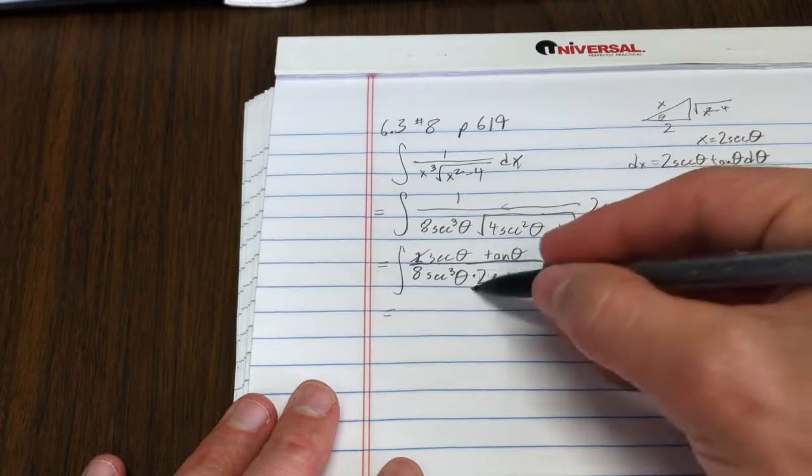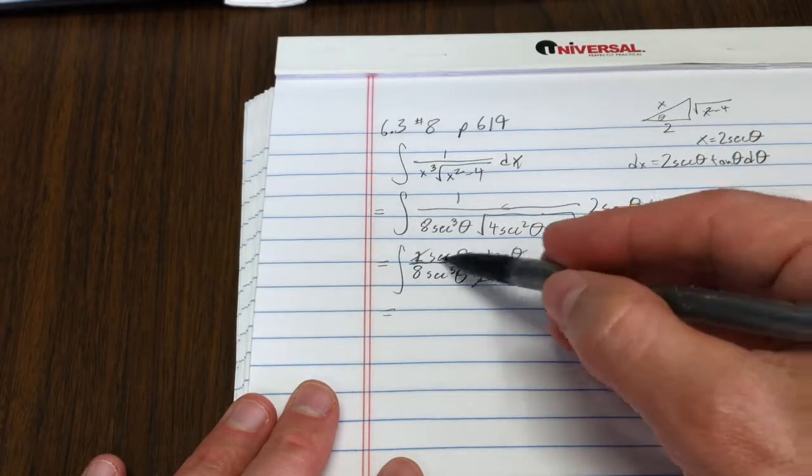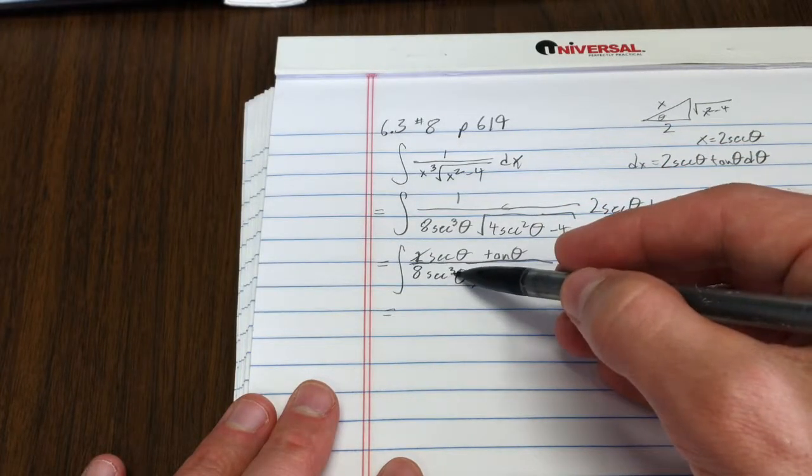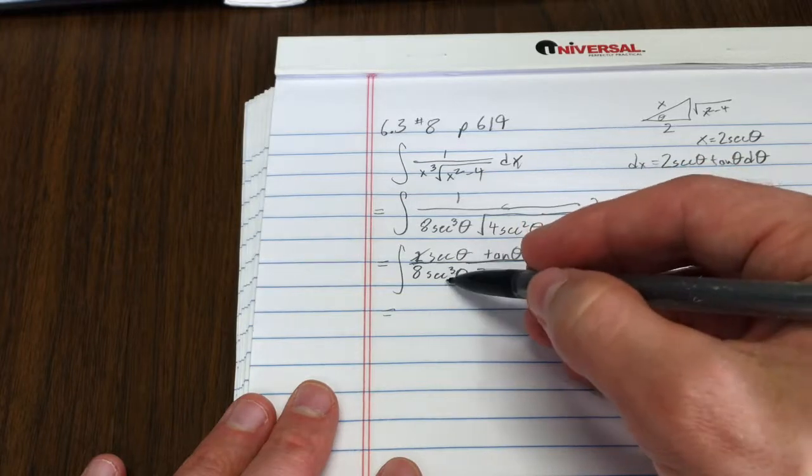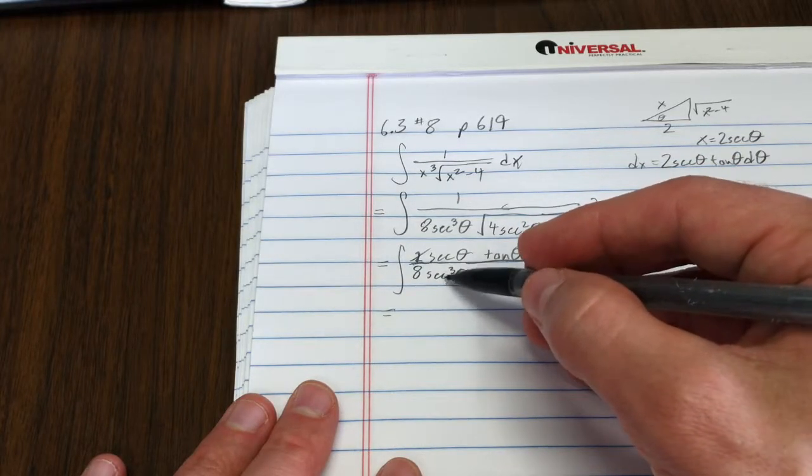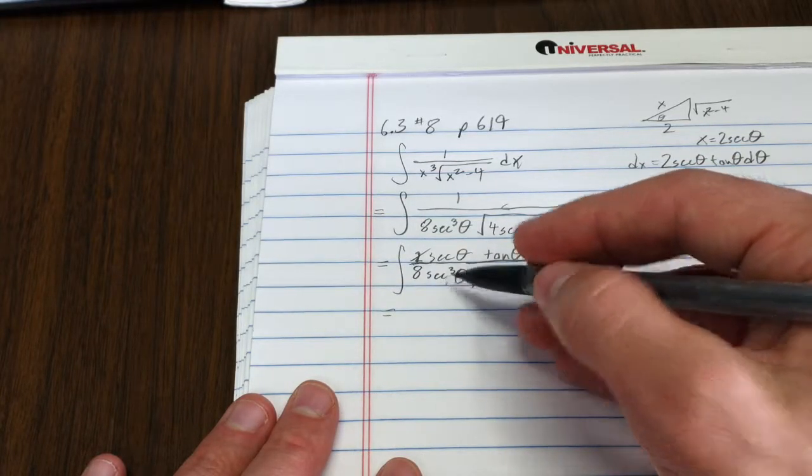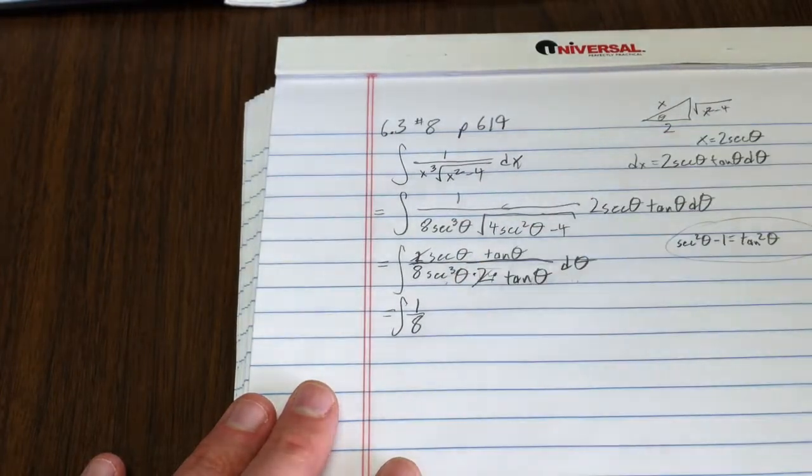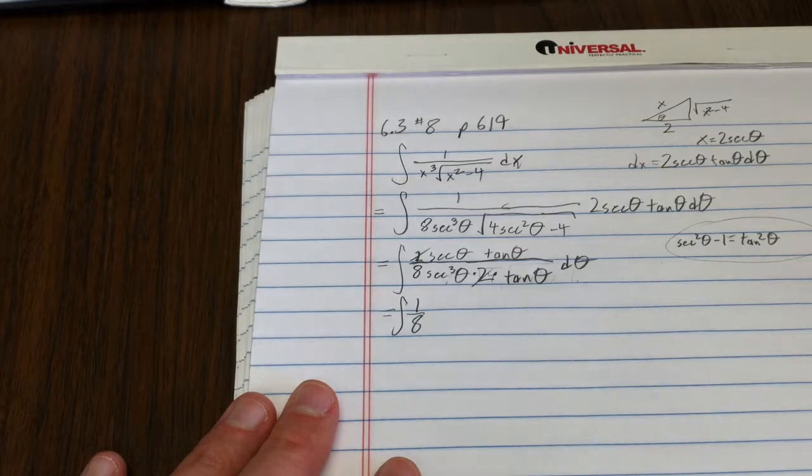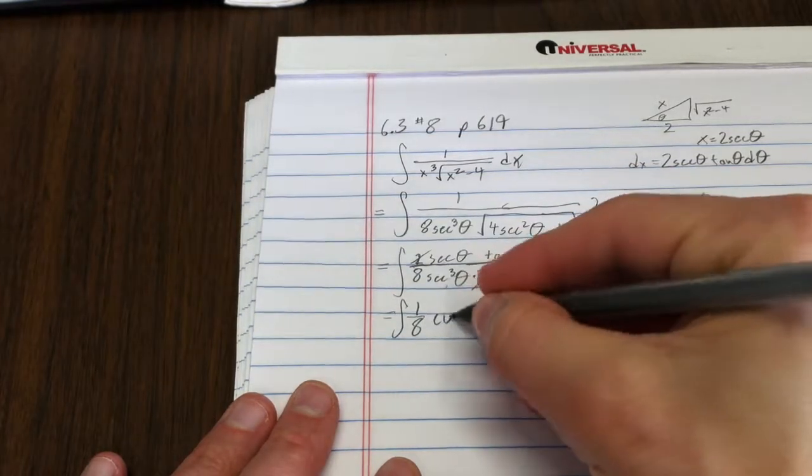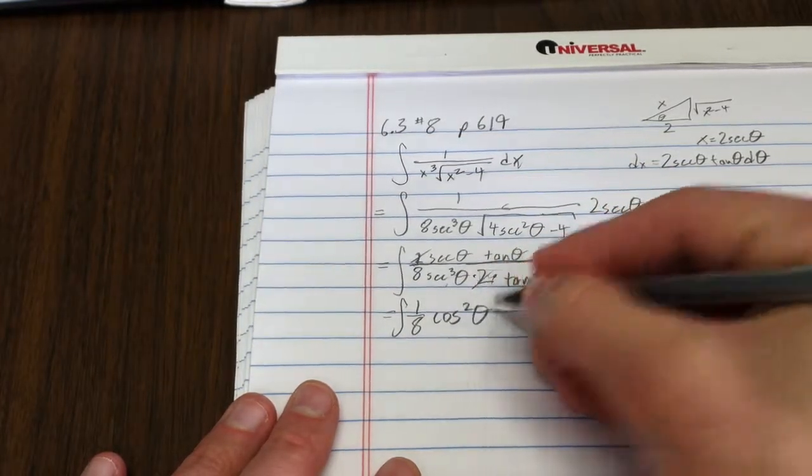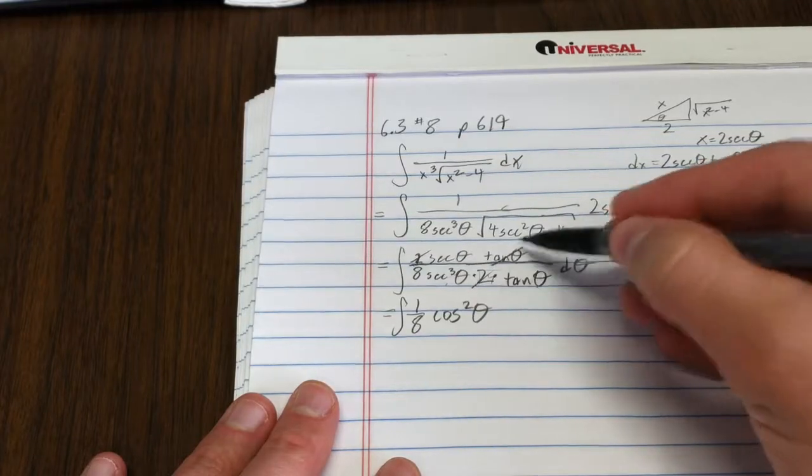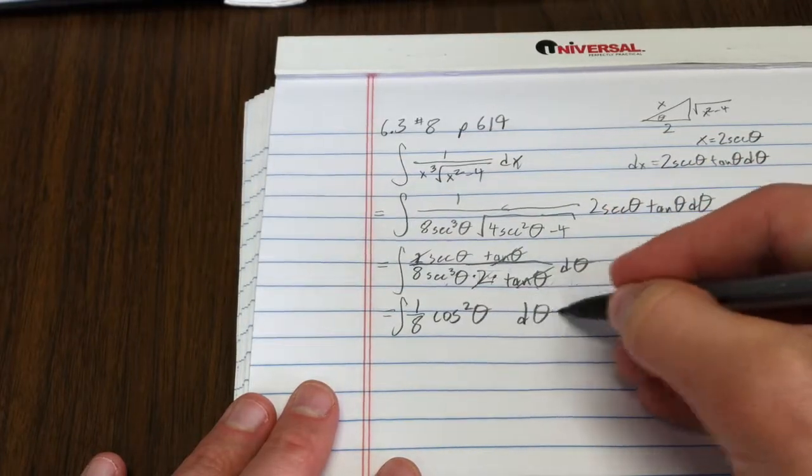The 2 and the 2 cancel. Secant cubed, secant over secant cubed gives me a secant squared, but it's in the denominator, right? So, what's 1 over secant? That is cosine. So, I really get a cosine squared theta. I have a tan theta over tan theta. Those cancel. I have a d theta.